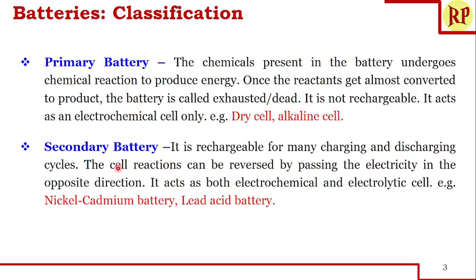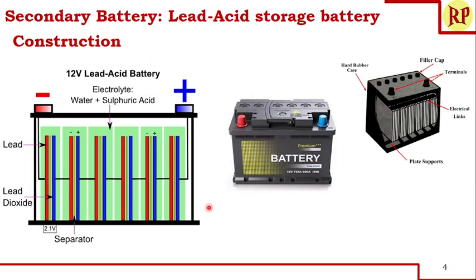A secondary cell is a rechargeable battery that can be charged and discharged for many cycles. The cell reactions taking place during the discharging cycle are reversed by passing electricity during the charging cycle, so it acts both as an electrochemical cell and an electrolytic cell. Examples are the nickel-cadmium battery and lead-acid battery. Today we are going to look into the lead-acid battery, which is the secondary battery type.